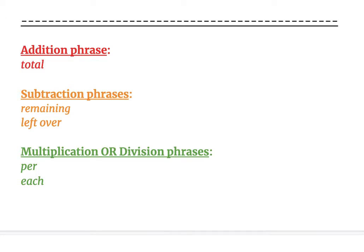Both of them could use the phrase per or each. So per just means like each, like five miles per hour, five miles each hour. So be sure that you have these additional phrases jotted down in your notes before we go to some examples.